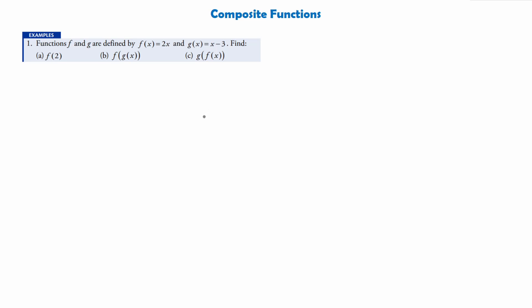Composite functions can seem quite tricky at first, but with a little bit of practice they become quite easy. So let's do a question on composite functions. Our first part, question a, just asks us to find f of 2. The question says functions f and g are defined by f of x equals 2x and g of x equals x minus 3. We're asked to find f where x is 2, so anywhere we see an x we substitute in 2, giving 2 times 2, so for part a it's simply going to be 4.